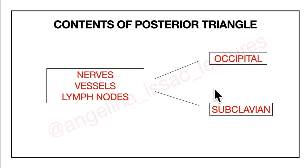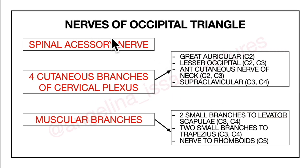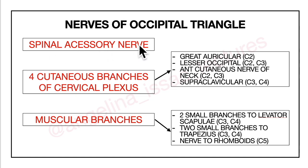After having learnt about the boundaries, now we will move on to the contents of the posterior triangle. We will be learning about the nerves of the occipital and subclavian triangle, the vessels, and the lymph nodes. First, let's learn about the nerves of the occipital triangle: the spinal accessory nerve, four cutaneous branches of the cervical plexus, and the muscular branches. Let's start with the spinal accessory nerve in detail.